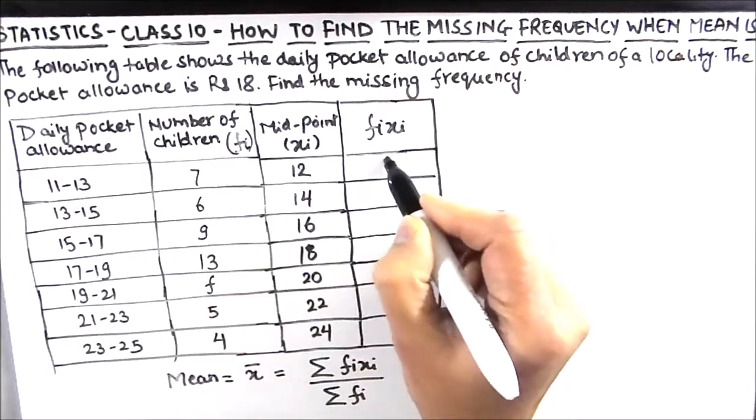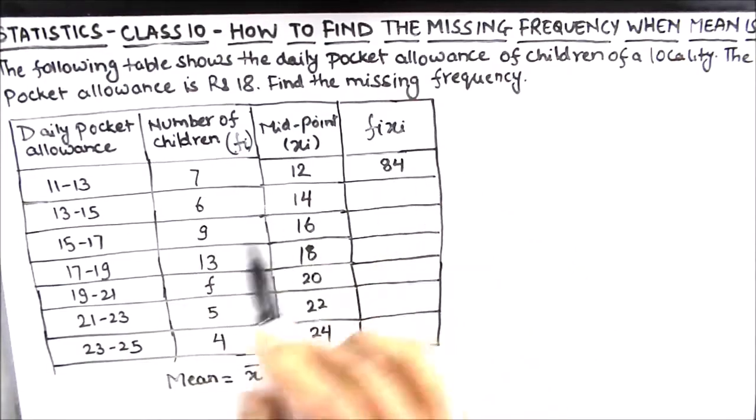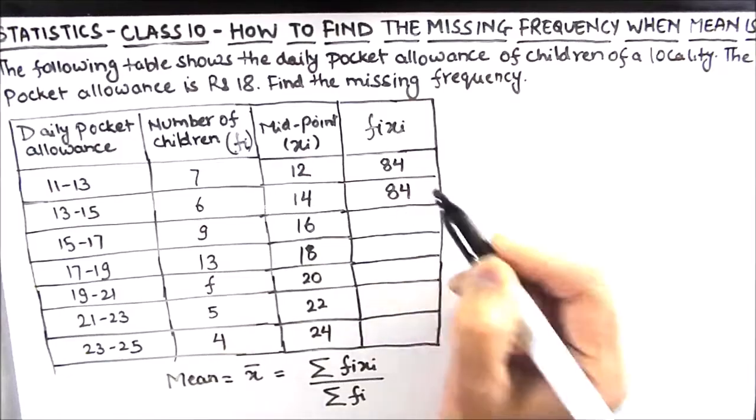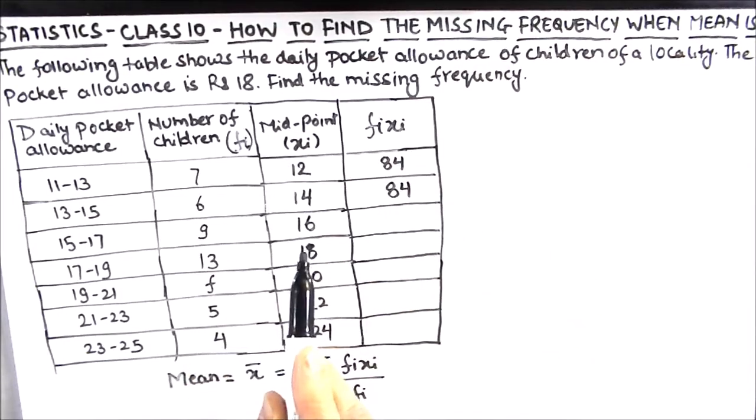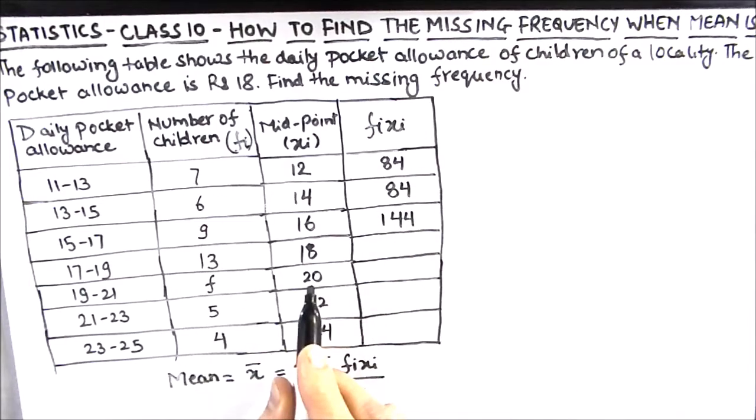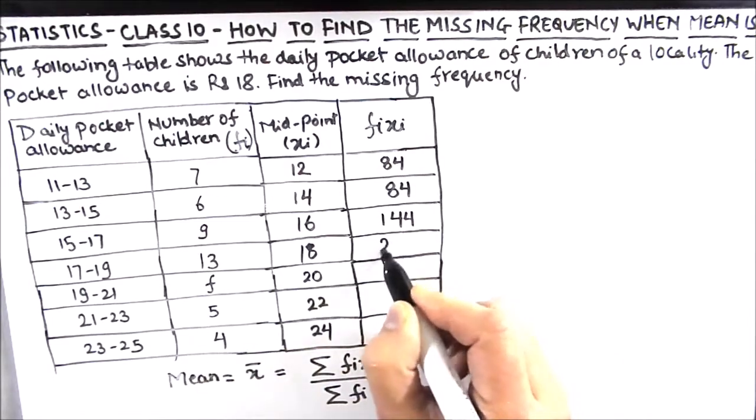is 84, 6 times 14 is 84, 9 times 16 is 144, 13 times 18 is 224.